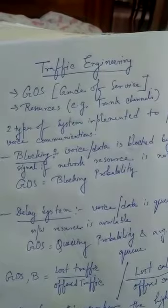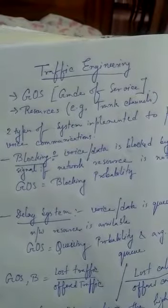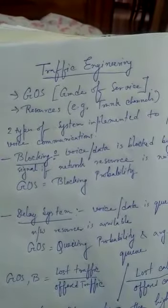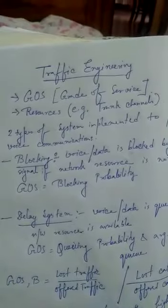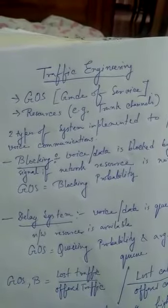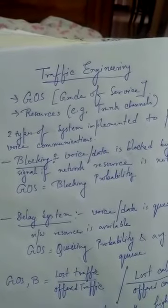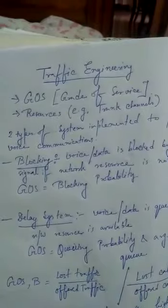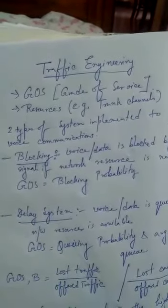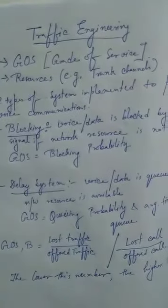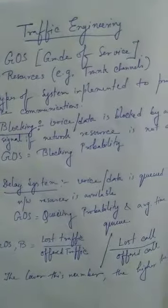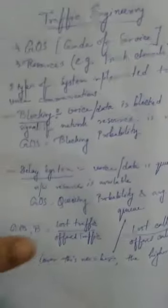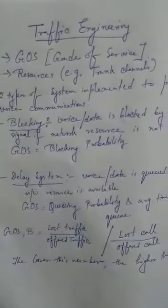Telephone networks are designed with a specified GOS, usually for the busiest hour. If a subscriber is able to make a call during the busiest hour, he will be able to make a call at any time on that network. Therefore, the lower the GOS number, the higher the performance of that network.